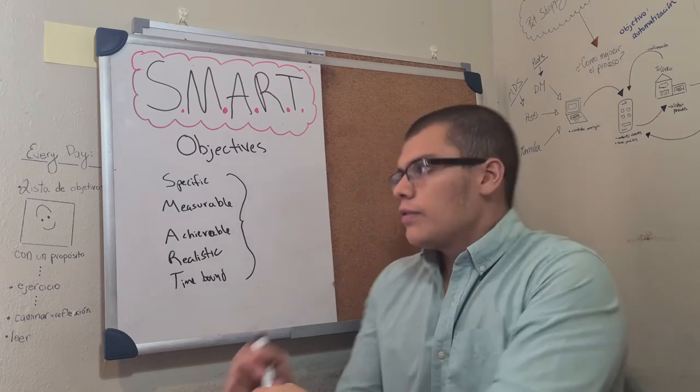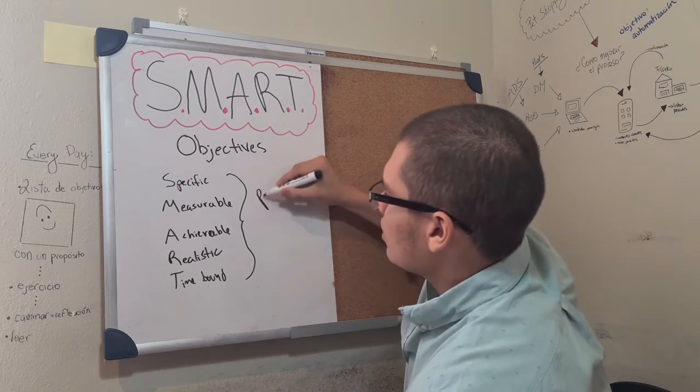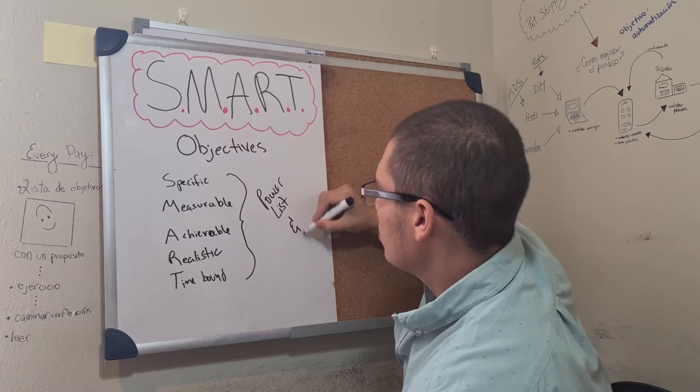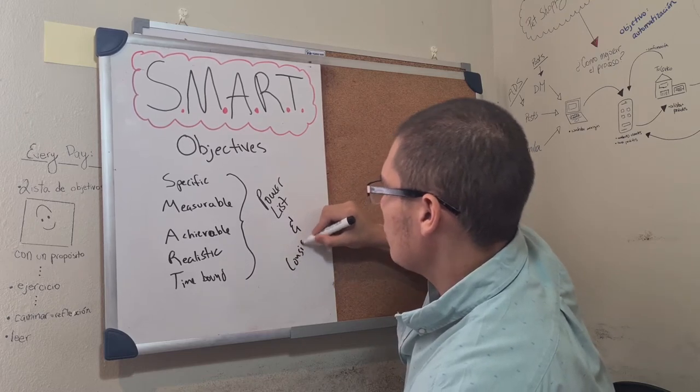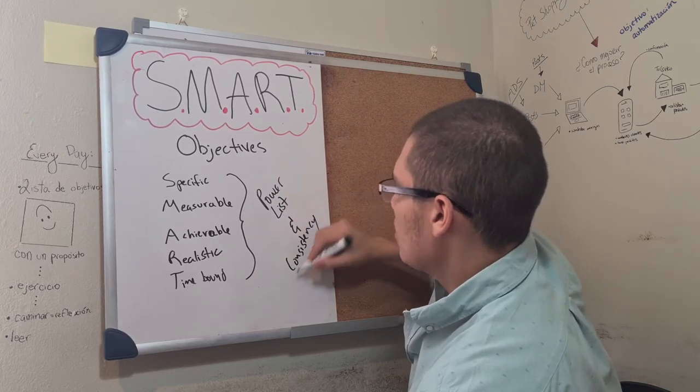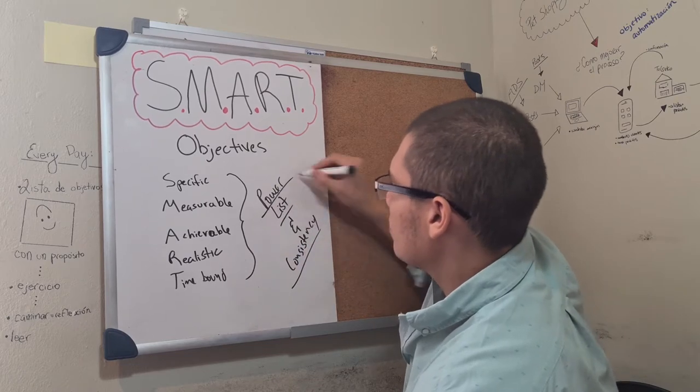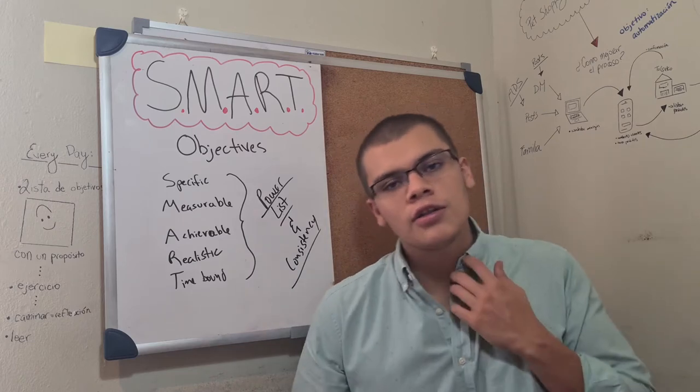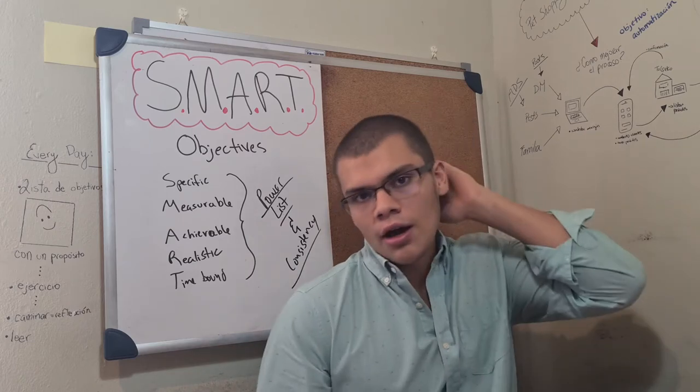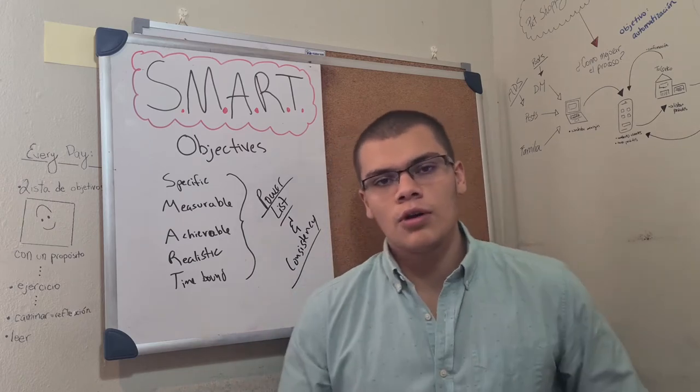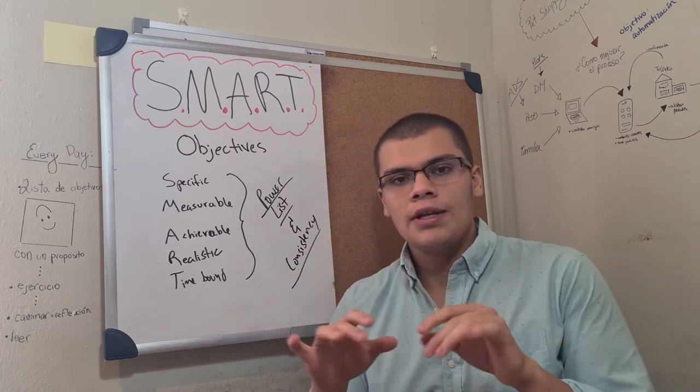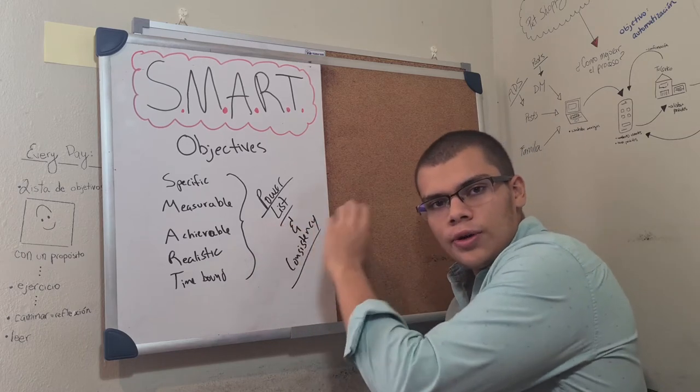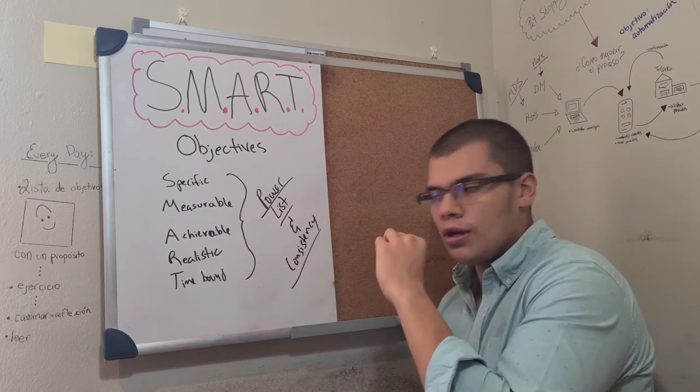We talked about the power list and consistency. So every time you're doing anything, whether that is creating videos, creating content, posting on Instagram, sending messages to possible customers, following up any type of lead, you have to think in your power list what you're doing every single day, how consistent are you being, and you have to work towards your SMART objective.